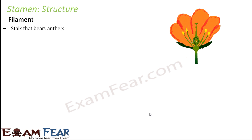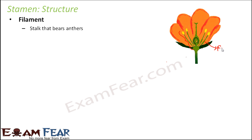This part is the stamen, and it itself has many different parts. The first part is the filament — this green colored, rod-like structure, which is a stock. This stock is called the filament.